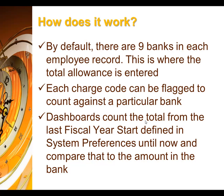First of all, there are nine banks in every employee record. This determines the total amount of time in the bank for that employee — this is where we figure the total allowance. Then each charge code can be flagged against numerous banks at once. When we put time into the bank in the employee record, that's where we start off with our reservoir. We take time out of the bank by using a charge code that's flagged against that kind of time. The dashboard calculates the difference between the total amount in the employee field and the sum of the hours against that charge code since the beginning of the fiscal year.